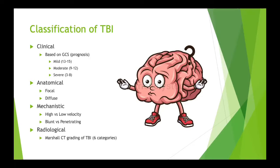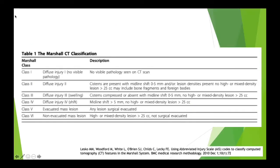For neurosurgery or radiology registrars, here's a summary of the Marshall CT classification for exam prep. It applies to patients who have sustained a traumatic brain injury and aims to describe findings on a CT scan. It goes through six categories - category one is essentially a normal-looking scan in a patient who clinically suffered a head injury with loss of consciousness or amnesia. The different categories then describe the different pathologies you can find on the CT scan.